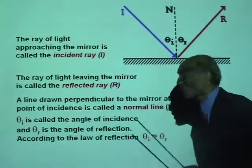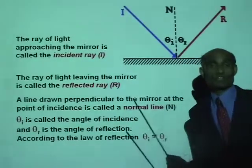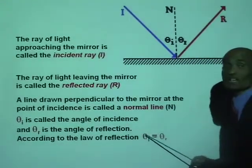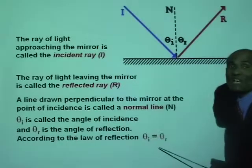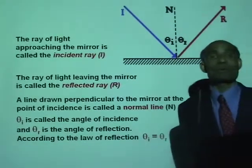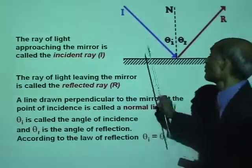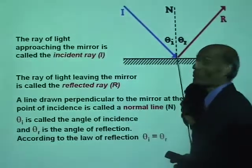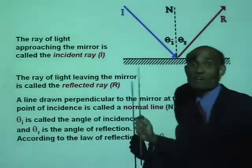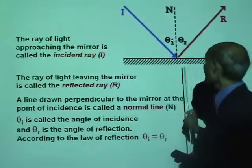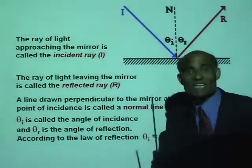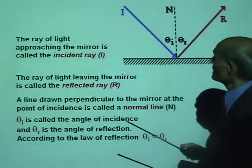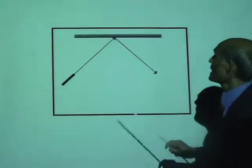According to the law of reflection, the angle of incidence equals the angle of reflection. When a ray of light gets reflected from a mirror, the angle of incidence equals the angle of reflection. It's a very important rule.